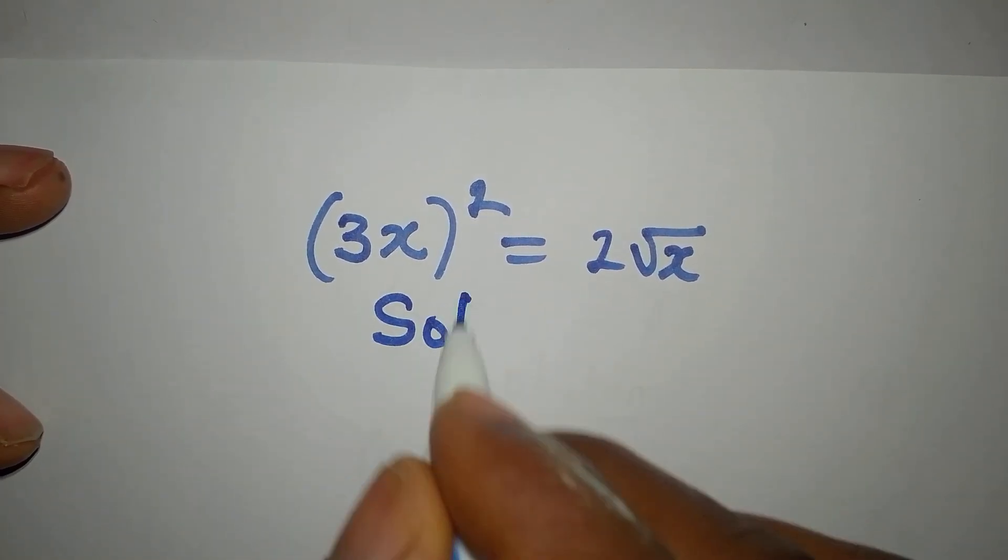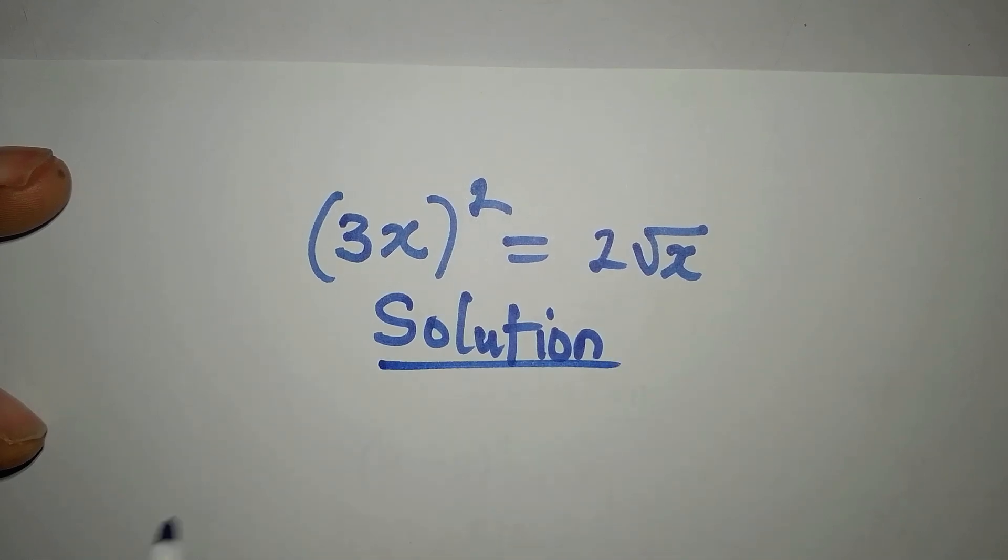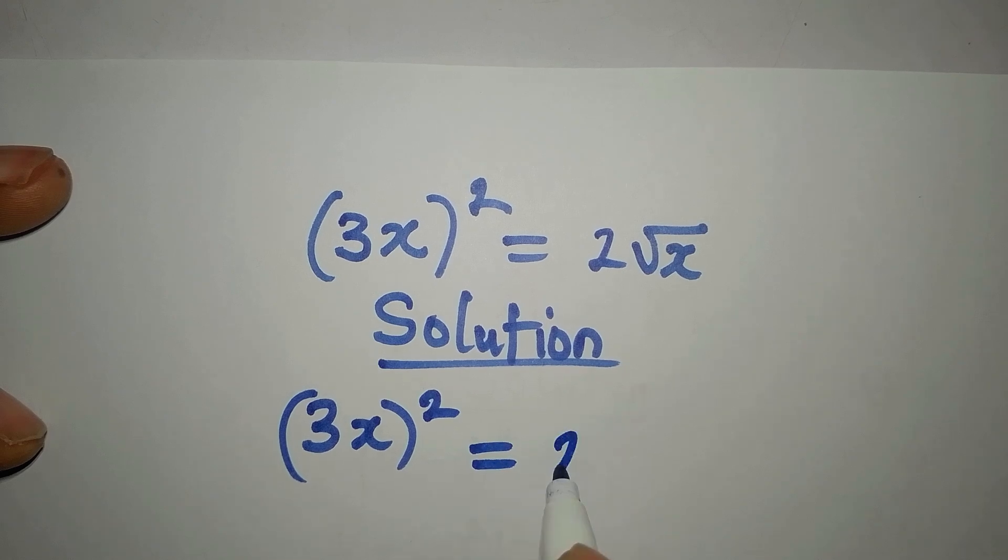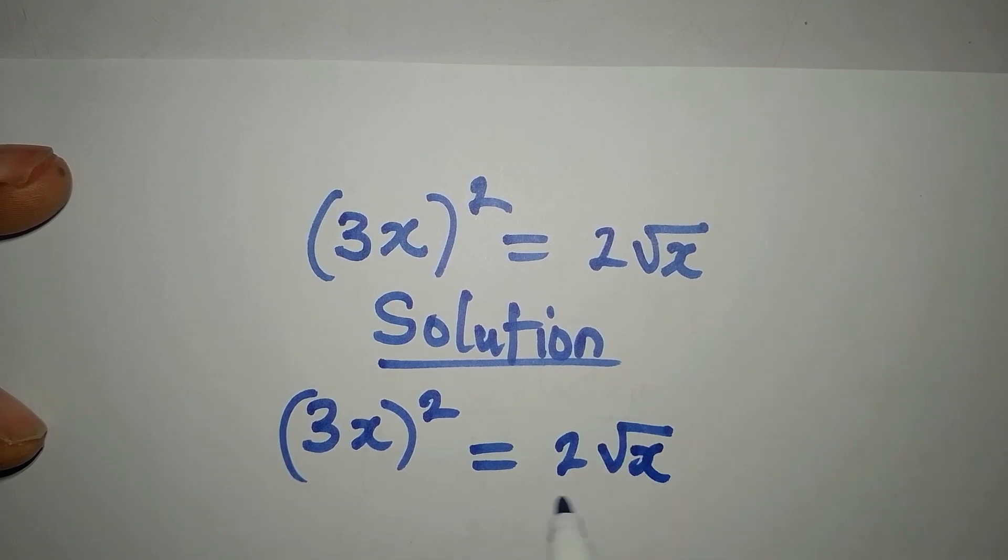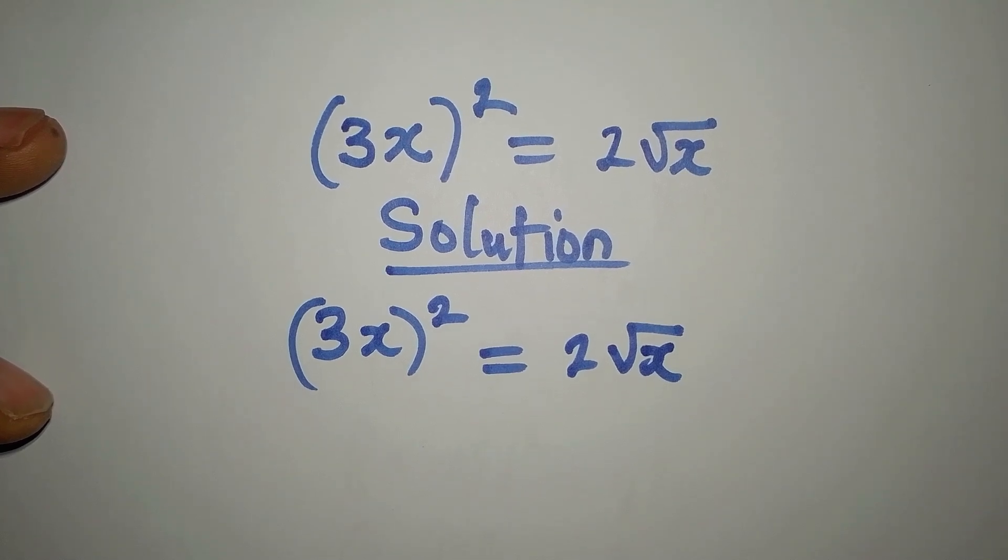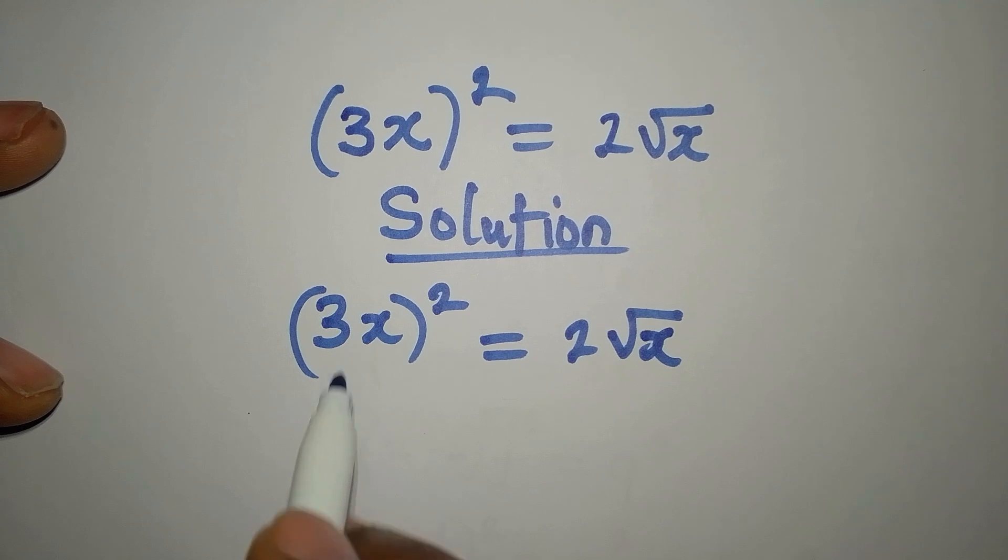Hello everyone, let's provide the solution to this problem: (3x)² = 2√x. What do I do? Maybe square this side, right? Yes, this is the same thing.